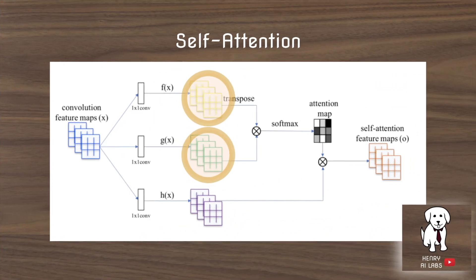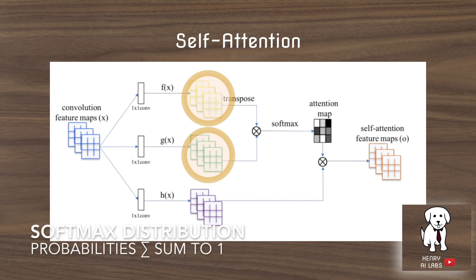F and G are extracted from the convolutional feature map of the previous layer. Then F is transposed, they're multiplied together, and passed through a softmax activation function to form the attention map. A softmax activation is one where the sum of the outputs is 1, so it's like a probability distribution, which is really useful for forming the attention map.